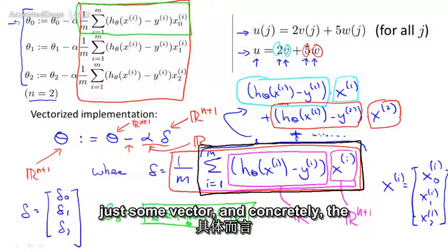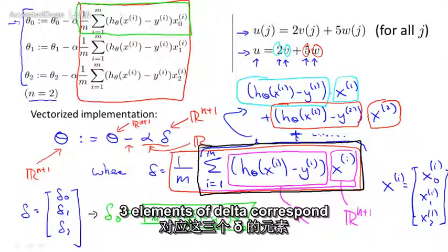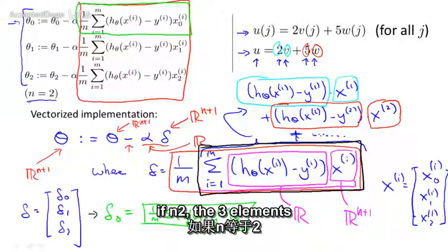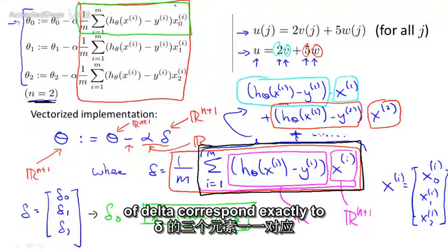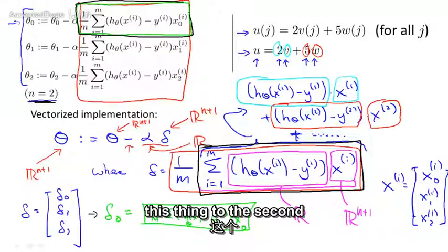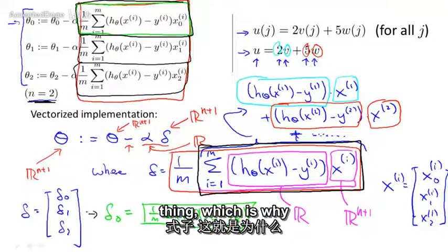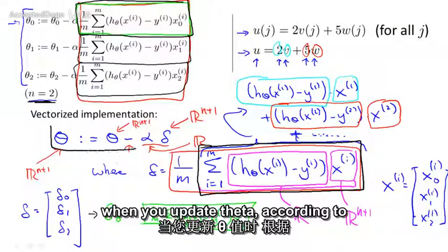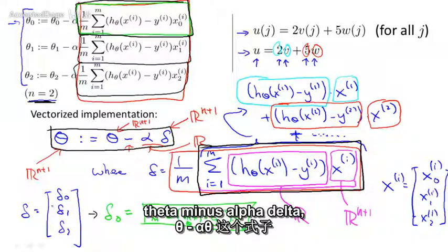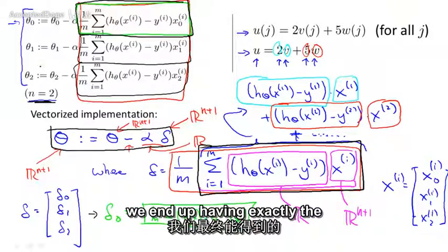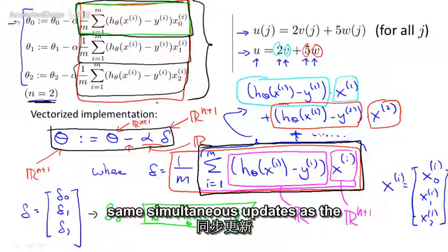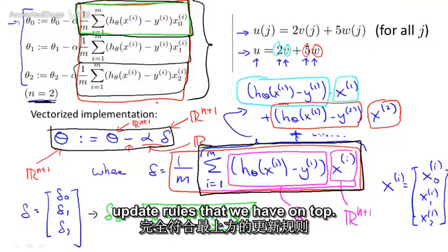And concretely, the three elements of delta correspond, if n equals 2, the three elements of delta correspond exactly to this thing, to the second thing, and this third thing. Which is why when you update theta, according to theta minus alpha delta, we end up carrying exactly the same simultaneous updates as the update rules that we have on top.